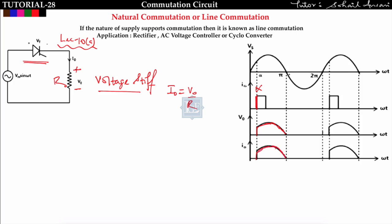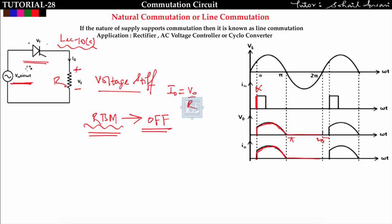After π, the supply is getting reversed — sin(ωt) goes negative. The moment the supply reverses, this thyristor will go into reverse blocking mode, meaning the thyristor turns off and becomes open-circuited. From π to 2π, output voltage and output current are zero. So it is the line supply voltage which forces this thyristor into reverse blocking mode and turns it off. That is why this is known as line commutation or natural commutation. The application is rectifiers, AC voltage controllers, and cycloconverters.